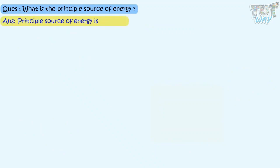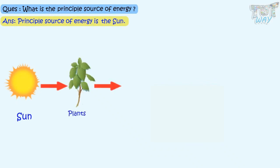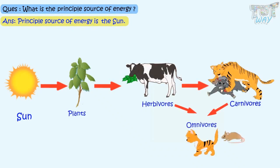Kids, do you know what is the principal source of energy? The principal source of energy is the sun. All the different sources of energy that we learned about derive their energy directly or indirectly from the sun. We will learn more about this in our next grades. So kids, today we learned a lot about energy.